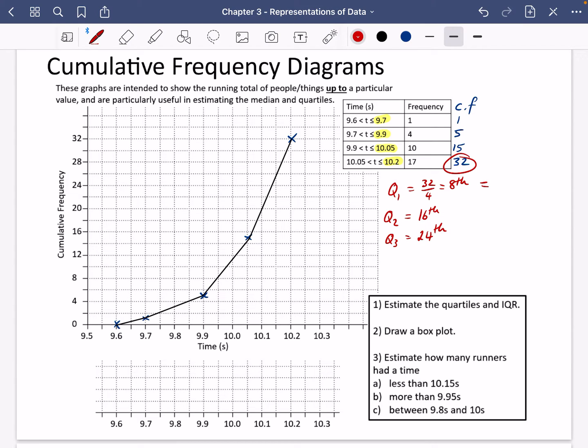So I'm going to work out Q1 first of all. I'm going to go across from the 8th position, draw a straight line here, and then look down and see what that comes to. That looks like it's roughly 9.95, so I'm going to say that is 9.95.